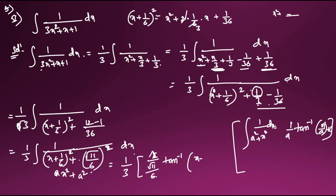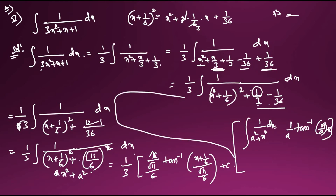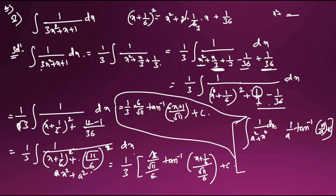Simplifying: (x + 1/6) divided by (√11/6) = 6(x + 1/6)/√11 = (6x + 1)/√11. So the final answer is (2/√11)·tan⁻¹((6x + 1)/√11) + C. This is the end of the fifth question.